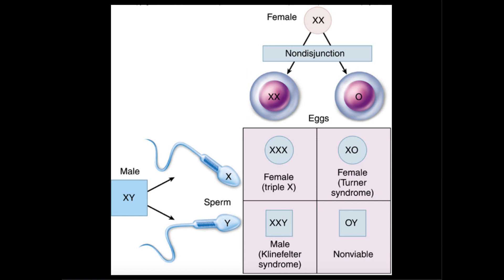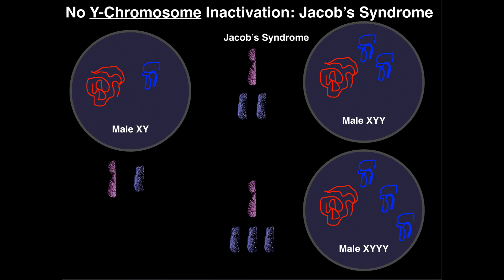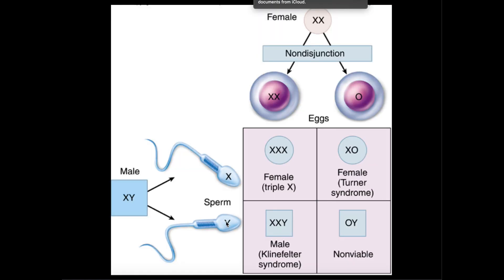In contrast, Jacob's Syndrome — where we have an abnormal number of Y chromosomes — cannot be caused by the mother. You should ask yourself why. Well, that's because women don't have a Y chromosome; they can't donate a Y chromosome if they don't have it. So only men can cause Jacob's Syndrome because they're the only ones that can donate a Y chromosome, and to do this they would have to donate at least two Y chromosomes. Of course, the most common case is where they're going to donate two Y chromosomes.